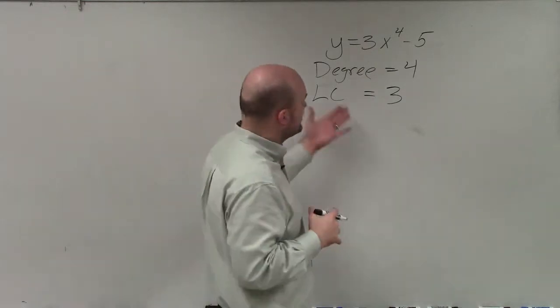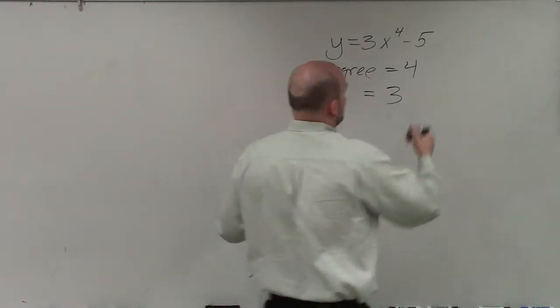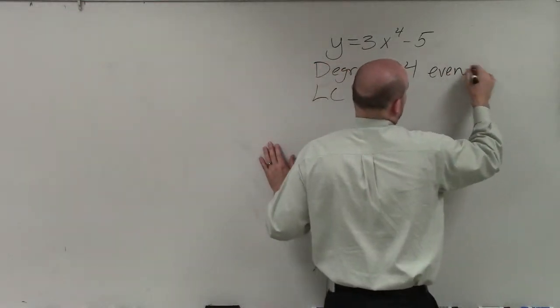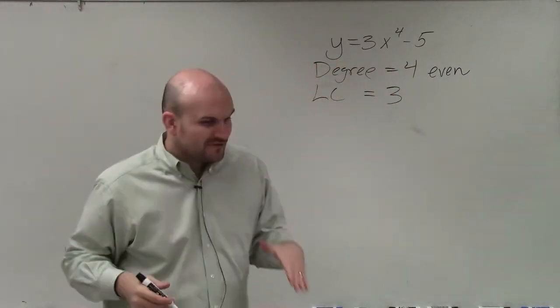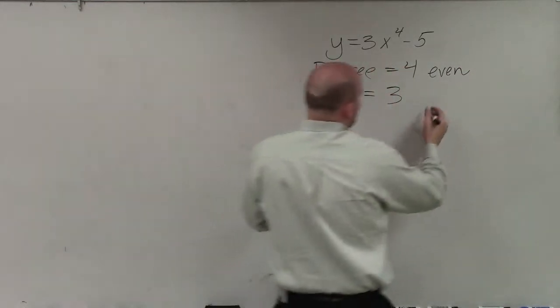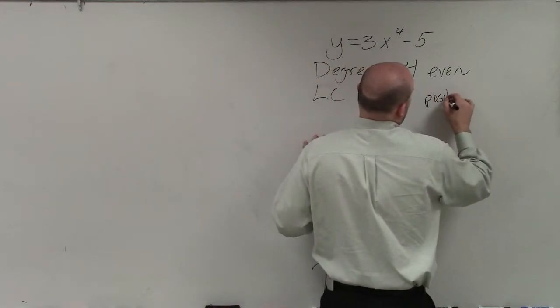When determining end behavior, the degree, we're only really concerned if it's even or odd. And 4 is an even number. And our leading coefficient, we really are only concerned if it's positive or negative. And 3, in this case, is positive.